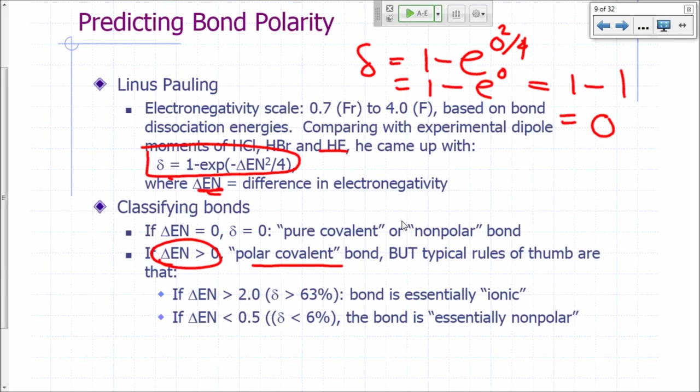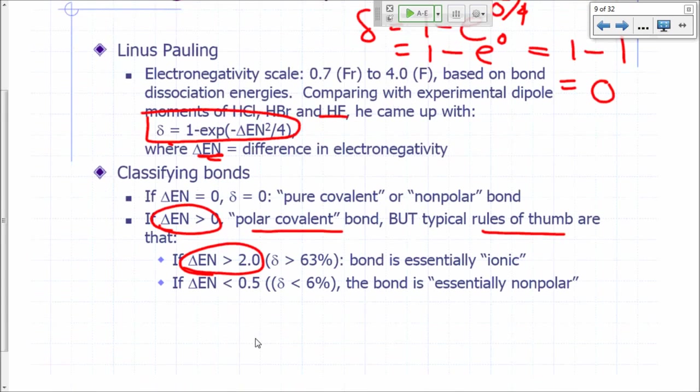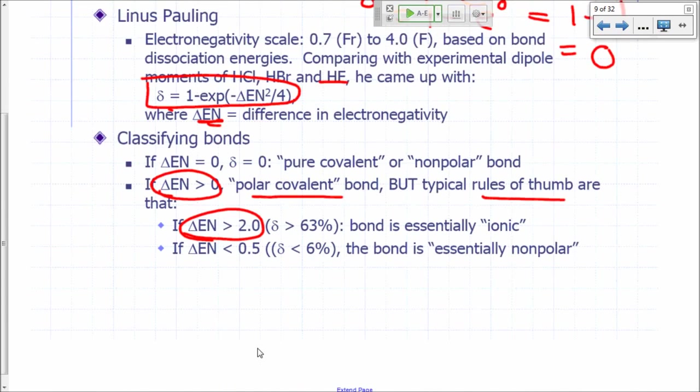But typically, we have what we call rules of thumb that say if your electronegativity difference is greater than 2, we say that the bond is essentially ionic. What does that mean? Let's calculate delta if the difference in electronegativity is 2.